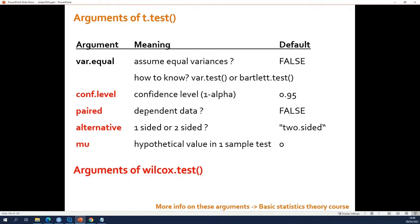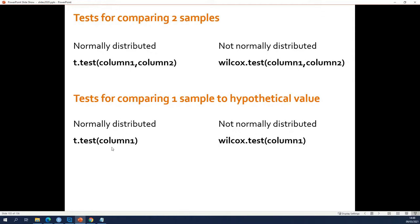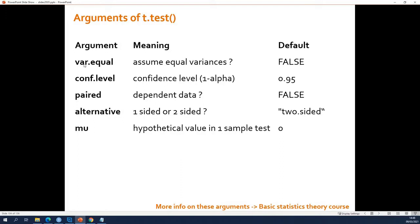Any t-test you can imagine is done by the t.test function. A one-sample t-test, a two-sample t-test with Welch correction, a two-sample t-test without Welch correction — then you change var.equal — a paired t-test — then you change paired. All t-tests you can imagine are done by this function just by tweaking the different arguments. And the same is true for the Wilcoxon test.